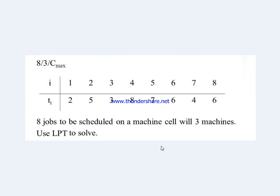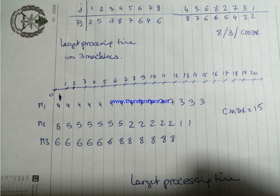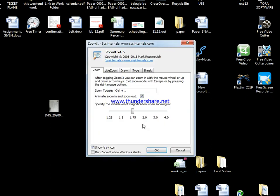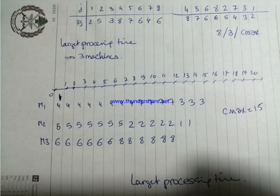To solve this activity, we have eight jobs and we need to schedule them on three machines using the Largest Processing Time rule. We have the jobs from one to eight with different processing times. The first step is to arrange them in decreasing order depending on their processing time.